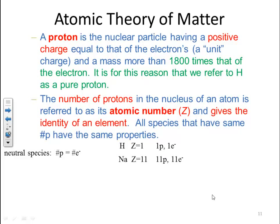For sodium, atomic number 11 means you have 11 protons and 11 electrons in a neutral species. For chlorine, atomic number 17 — in a neutral species, you have 17 protons and 17 electrons.